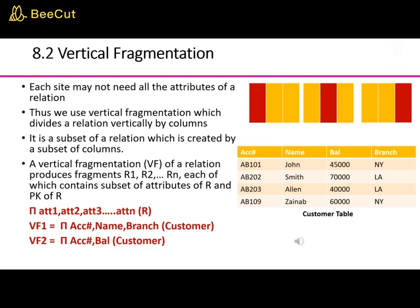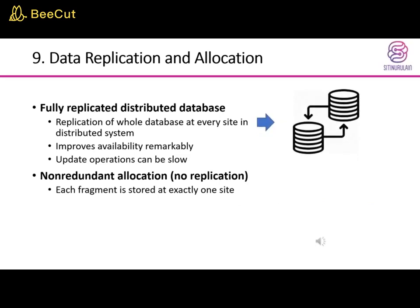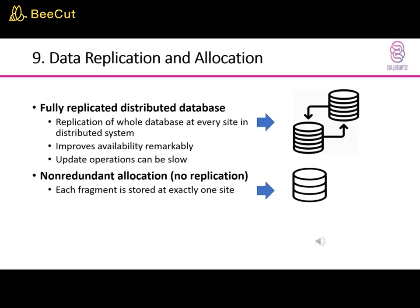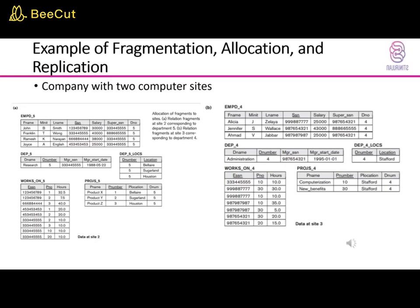In a replicated distributed database, the whole database is replicated at every site in the distributed system, which can improve availability remarkably; however, update operations can be slow. In non-redundant allocation, there is no replication and each fragment is stored at exactly one site. In partial replication, some fragments are replicated and others are not, defined by a replication schema. In data allocation, each fragment is assigned to a particular site, with choices depending on performance and availability goals.